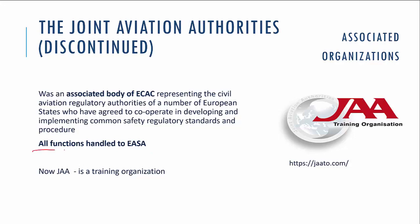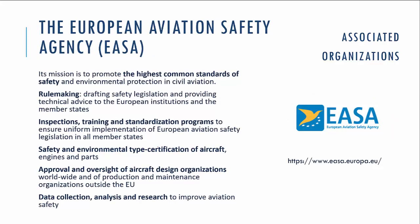The European Aviation Safety Agency (EASA) is the organization in the European Union focused on promoting the highest common standards of safety and environmental protection in civil aviation in Europe. It works on safety rulemaking, safety legislation, and inspection, training, and standardization programs to ensure uniform implementation of European aviation safety legislation in all member states. It also handles safety and environmental type certification of aircraft, engines, and parts, approval and oversight of aircraft design organizations worldwide, production and maintenance organizations outside the EU, and data collection, analysis, and research to improve aviation safety.